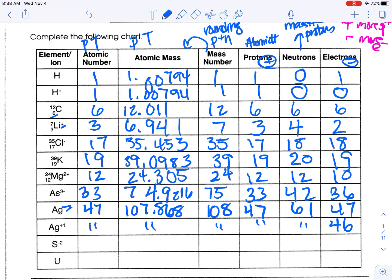Sulfur has atomic number 16. The atomic mass is 32.065, so the mass number is 32. Protons is 16. Neutrons is 32 minus 16, so 16. For electrons, notice there's a minus 2 charge, which means 2 more than normal, so 18 electrons.